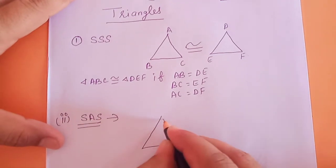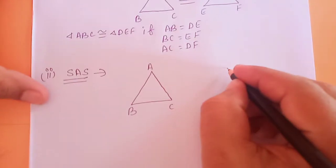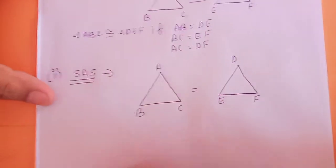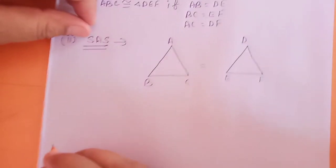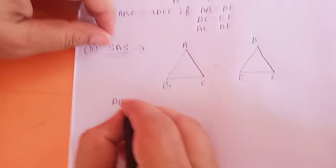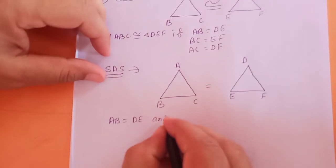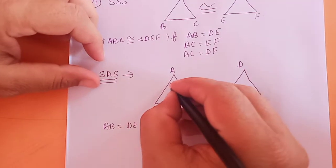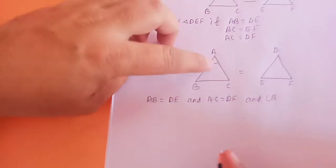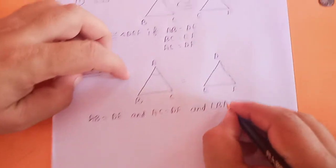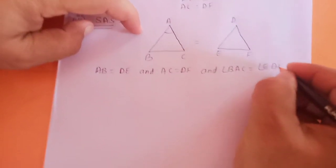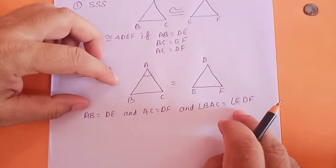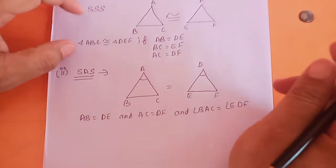This is triangle ABC and another triangle is DEF. These two triangles are said to be congruent by this method if AB equal to DE and AC equal to DF, and the included angle — angle BAC is equal to angle EDF. If this angle is equal to this angle, then we can say the two triangles are congruent.